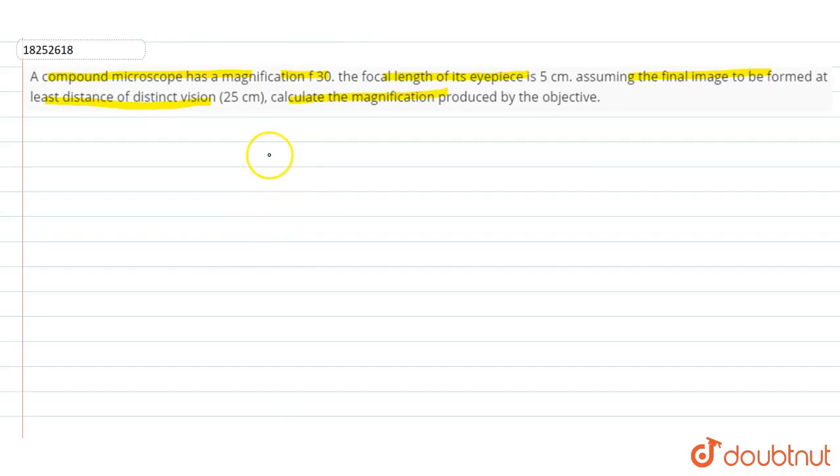The question is, what is given? First, let's see. Magnification is given. That is equal to minus 30. And focal length of the eyepiece is 5 cm.